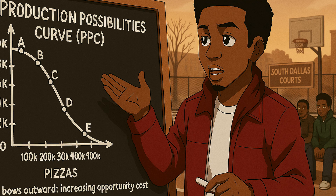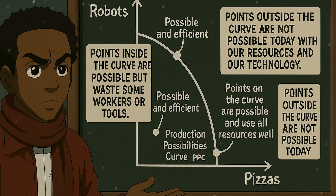Growth means the economy can produce more than before. On the graph, the whole curve shifts outward to the right. There are three big drivers of this outward shift. First, larger supplies of resources: a growing population adds workers and entrepreneurs, new mineral deposits are discovered, and better irrigation creates more farmland.